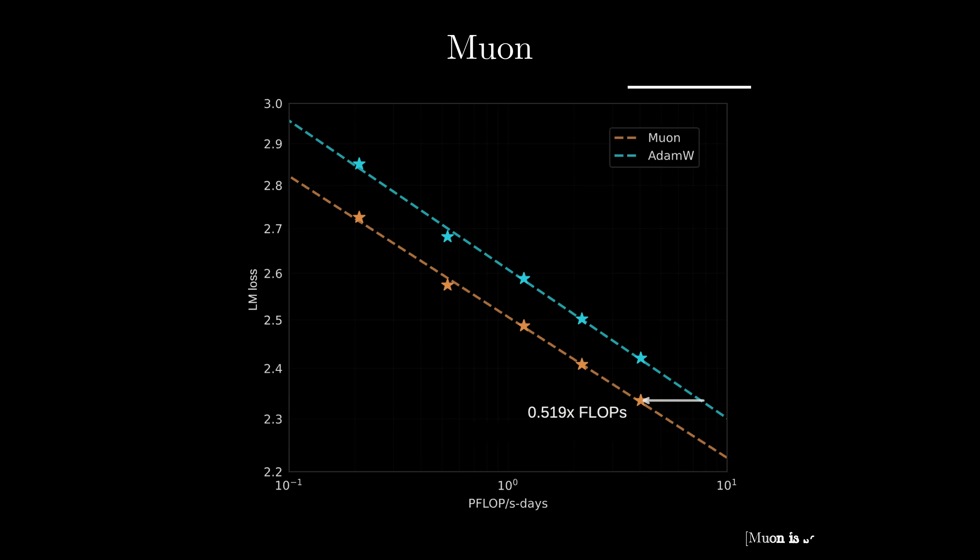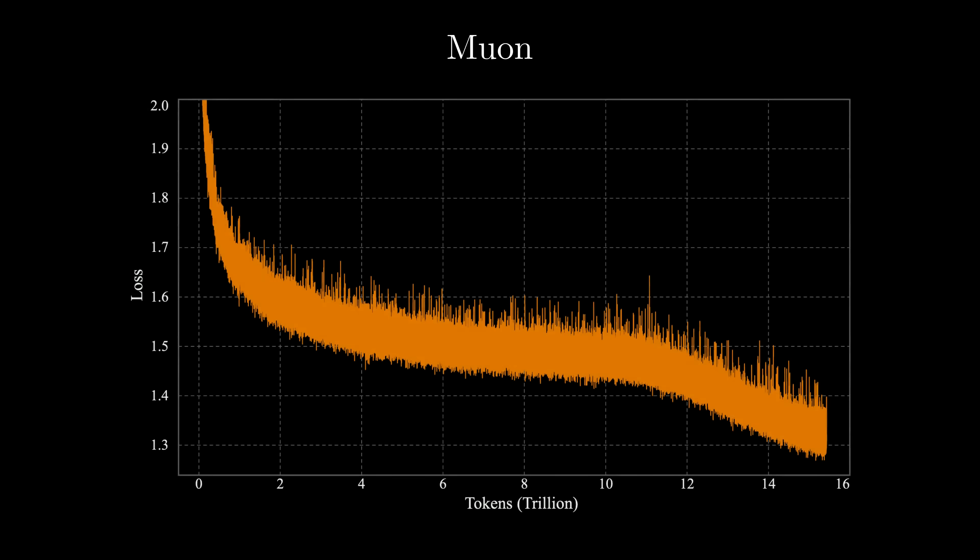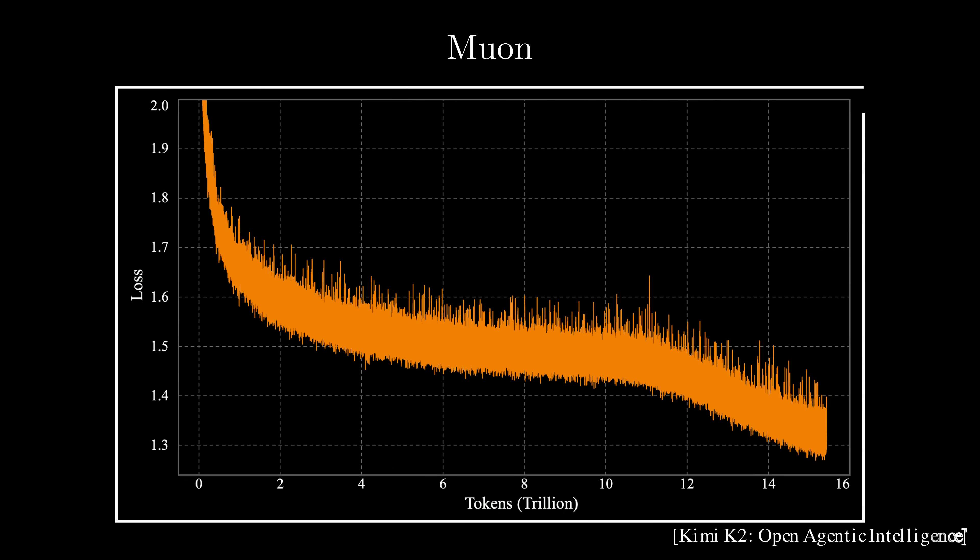The Muon Optimizer is getting increasingly more attention in the machine learning community. It's delivering impressive results on small language models, and is about twice as computationally efficient as AdamW. In other words, you can train faster, use less memory, and still get great results.